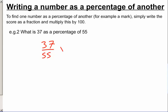And what we do is we multiply that by 100 to turn it into a percentage. And when we put that into a calculator, we get 67.27 recurring. Remember, that is 27, 27, 27, 27.